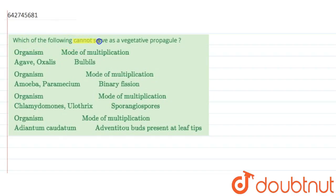The question is: which of the following cannot serve as a vegetative propagule? The first option is Agave and Oxalis with bulbs as a mode of multiplication. The second option is Amoeba and Paramecium with binary fission as a mode of multiplication.